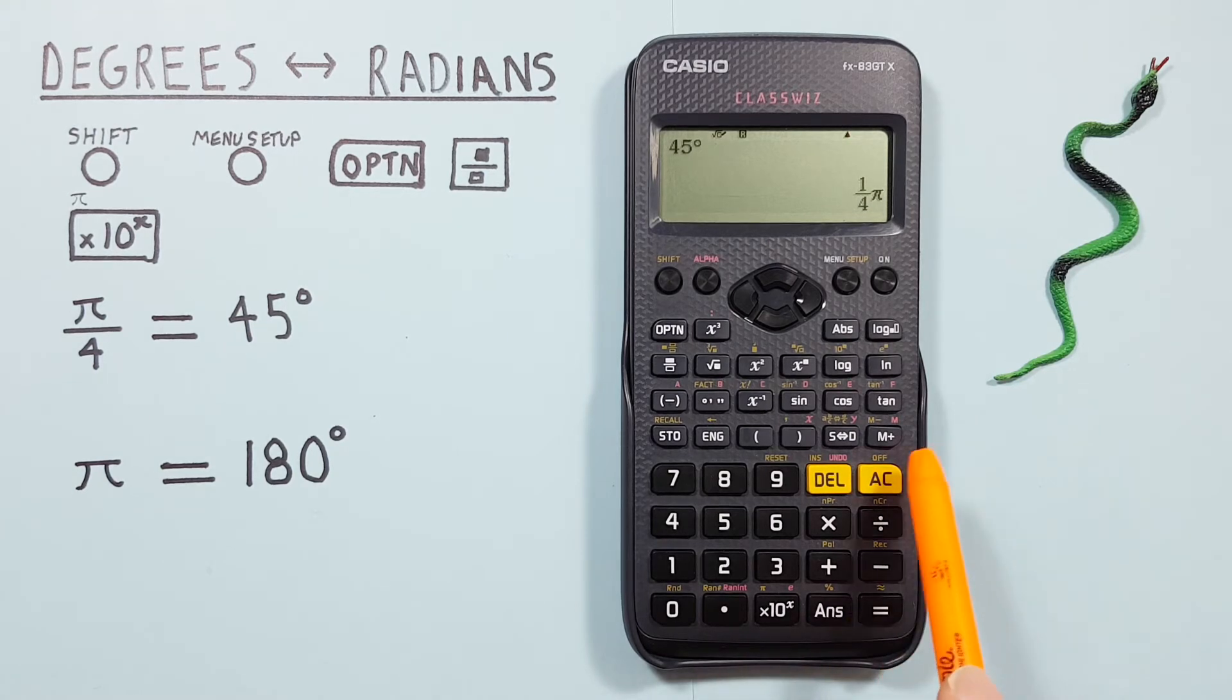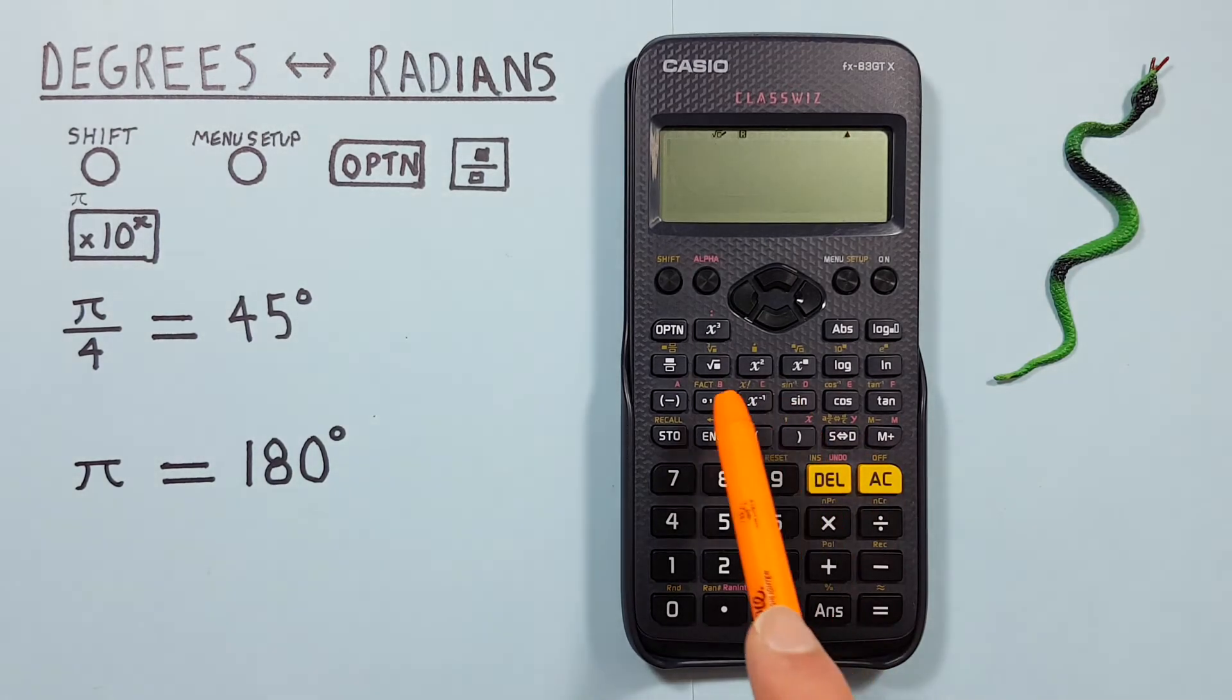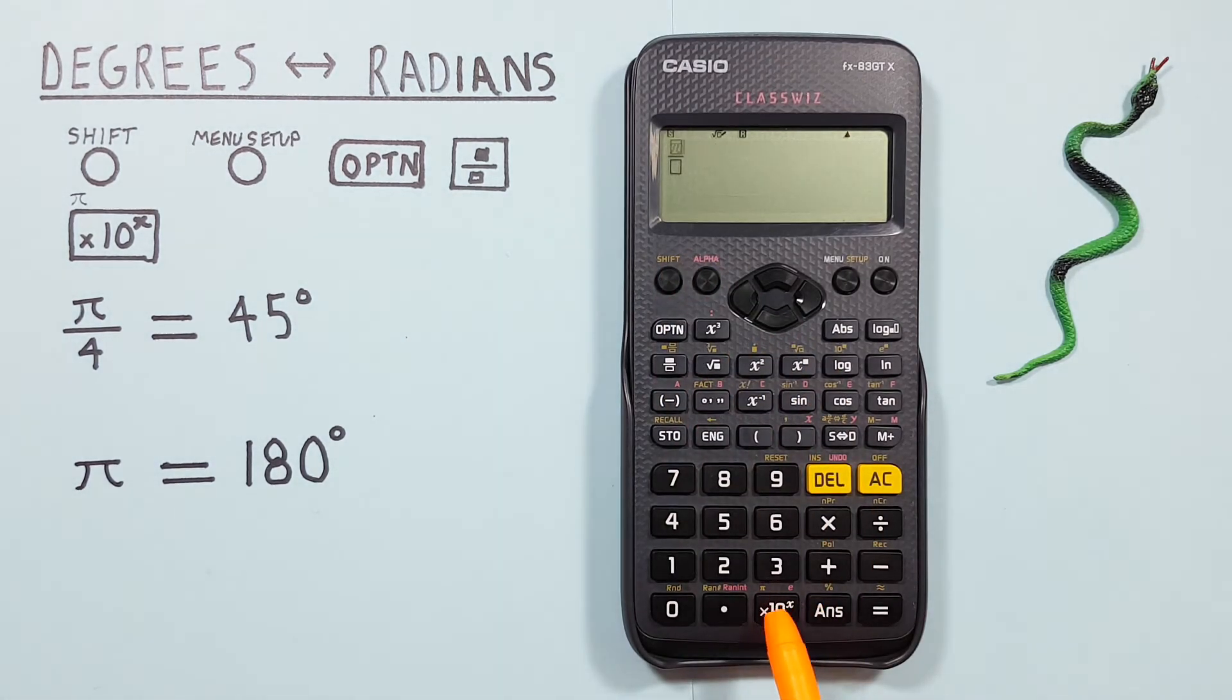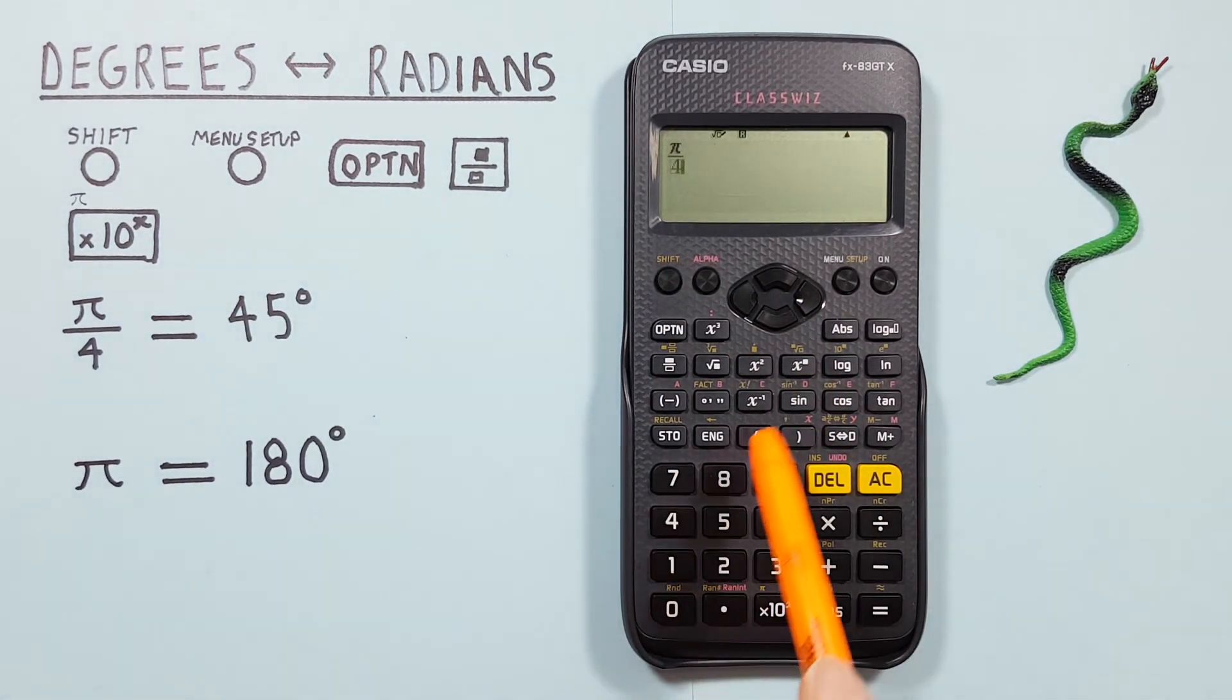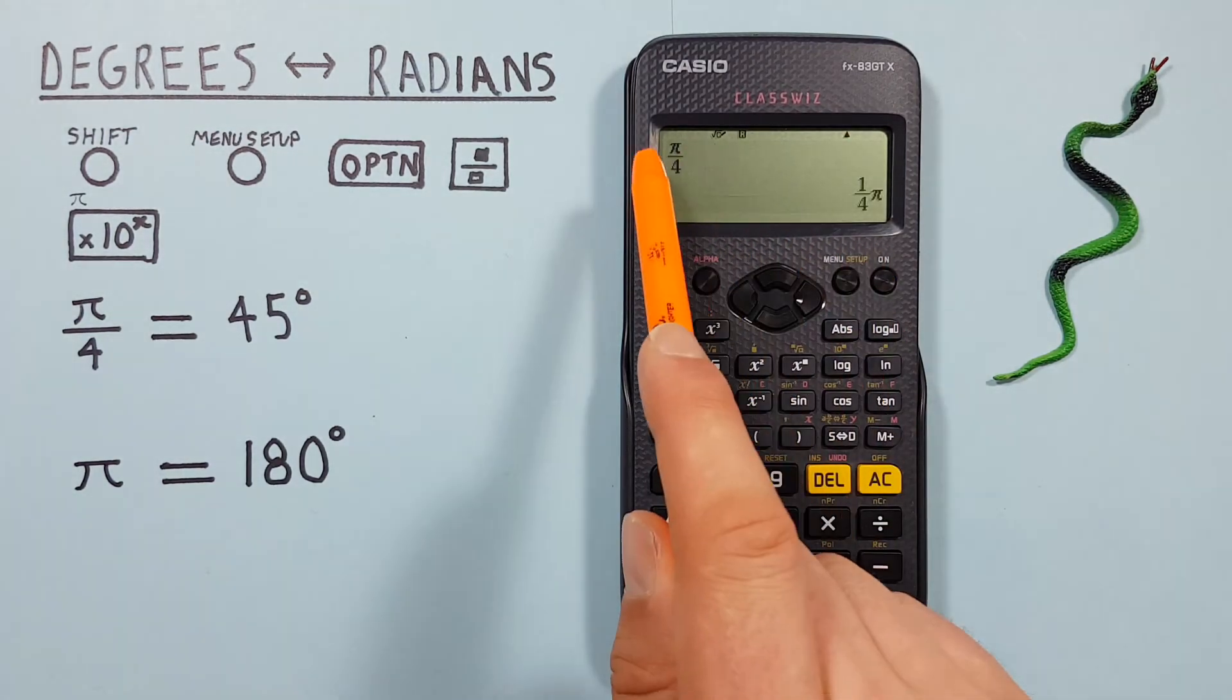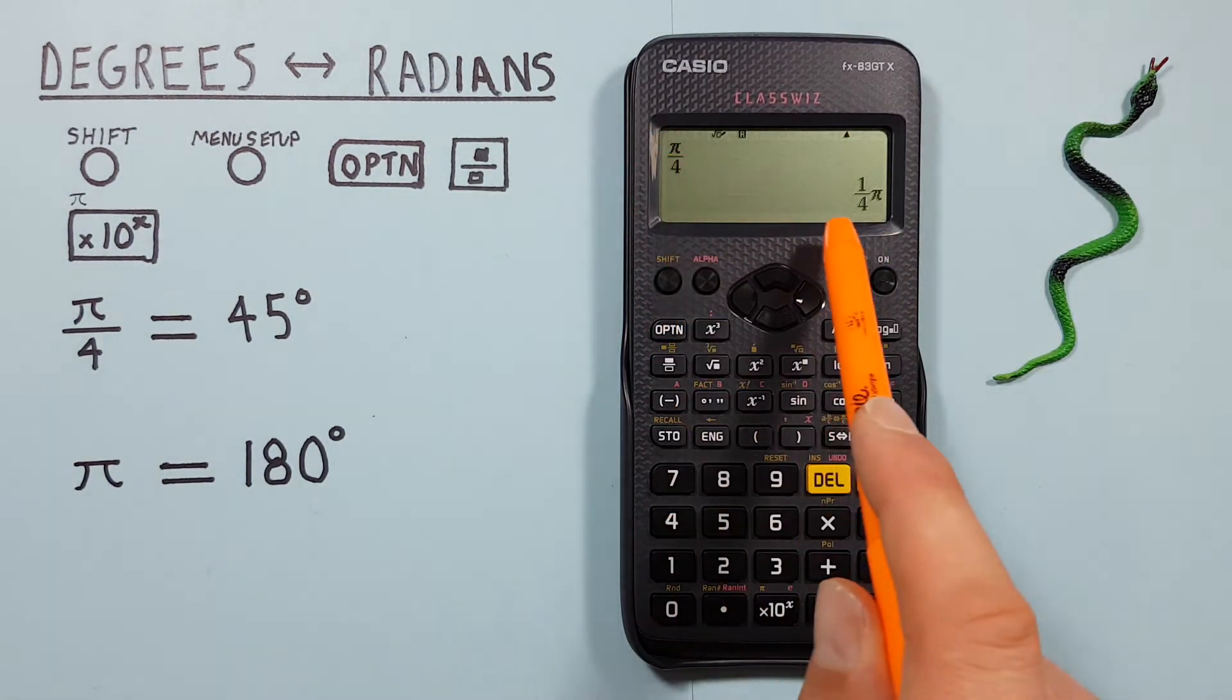If we want to prove that to ourselves, we can enter π over 4 with the fractions, so fraction, π over 4, press equals, and there we go. It's just a different way of writing the same thing.